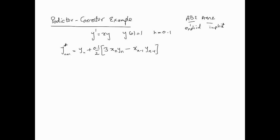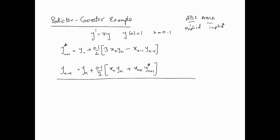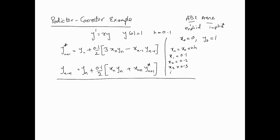We put an asterisk on the predictor value to indicate it's the predicted estimate. The corrector formula uses that asterisk value. Our initial conditions are x0 = 0, y0 = 1, and x_n = x0 + n*h, so x1 = 0.1, x2 = 0.2, x3 = 0.3, and so on.